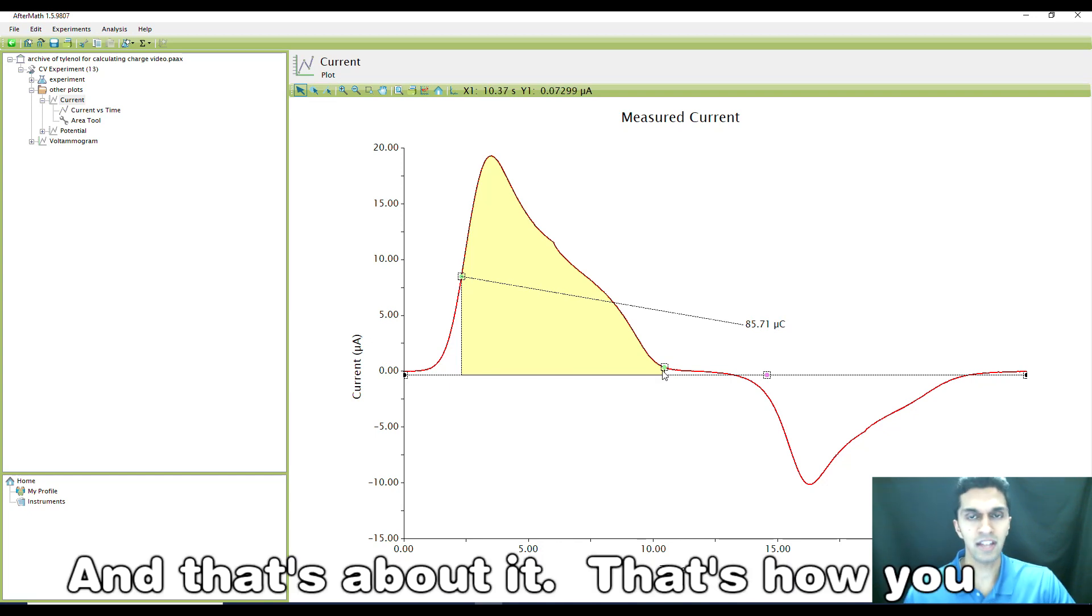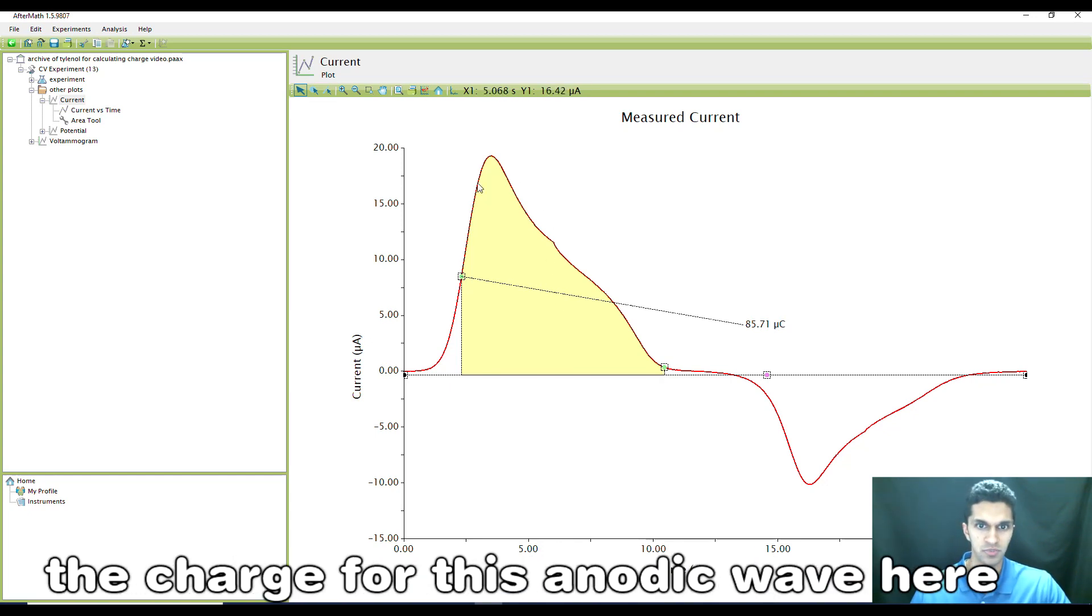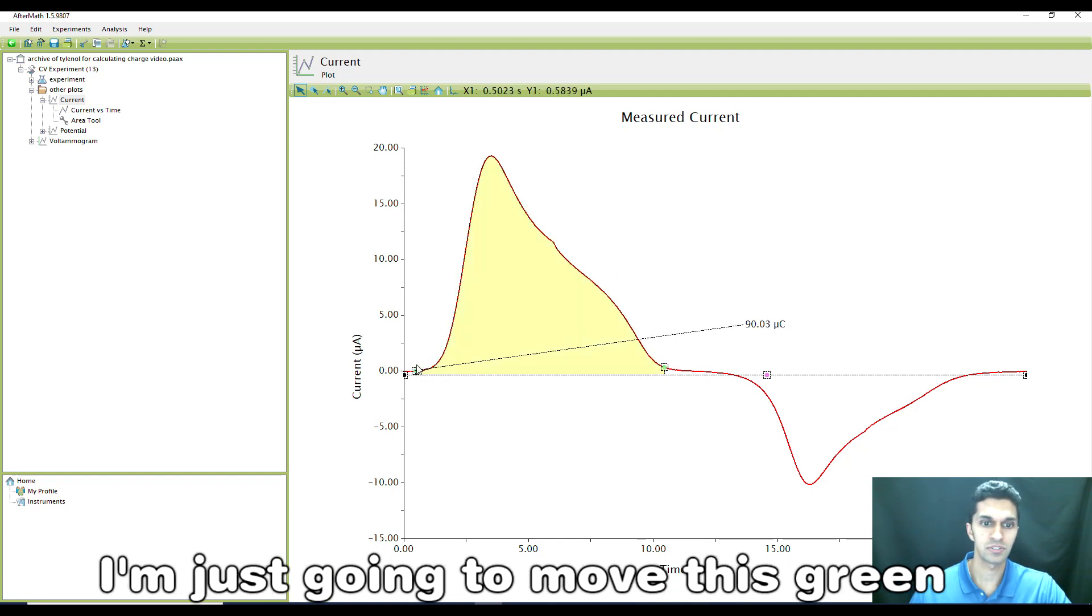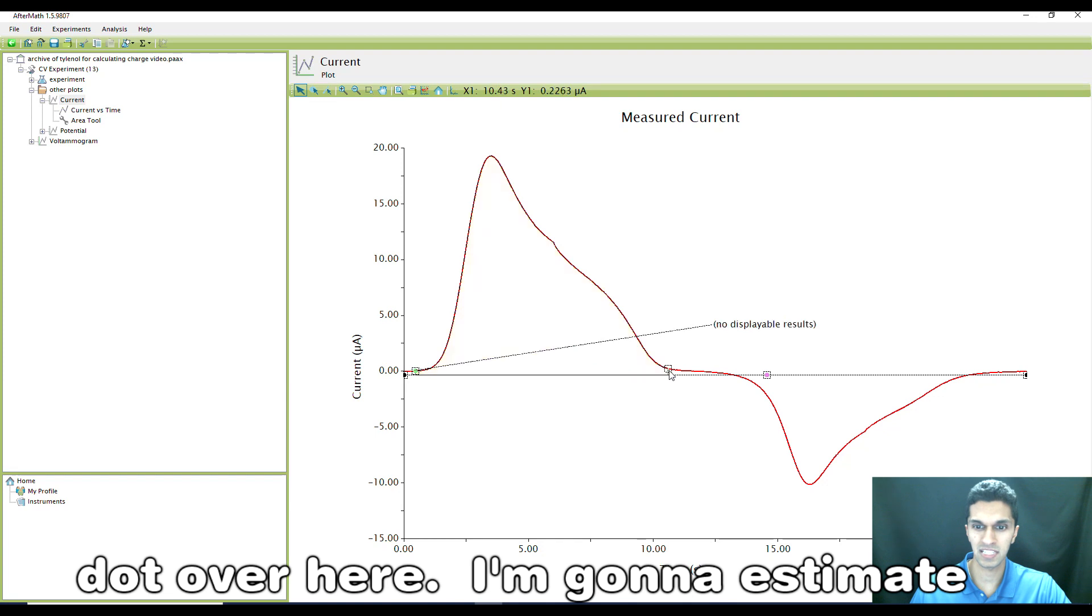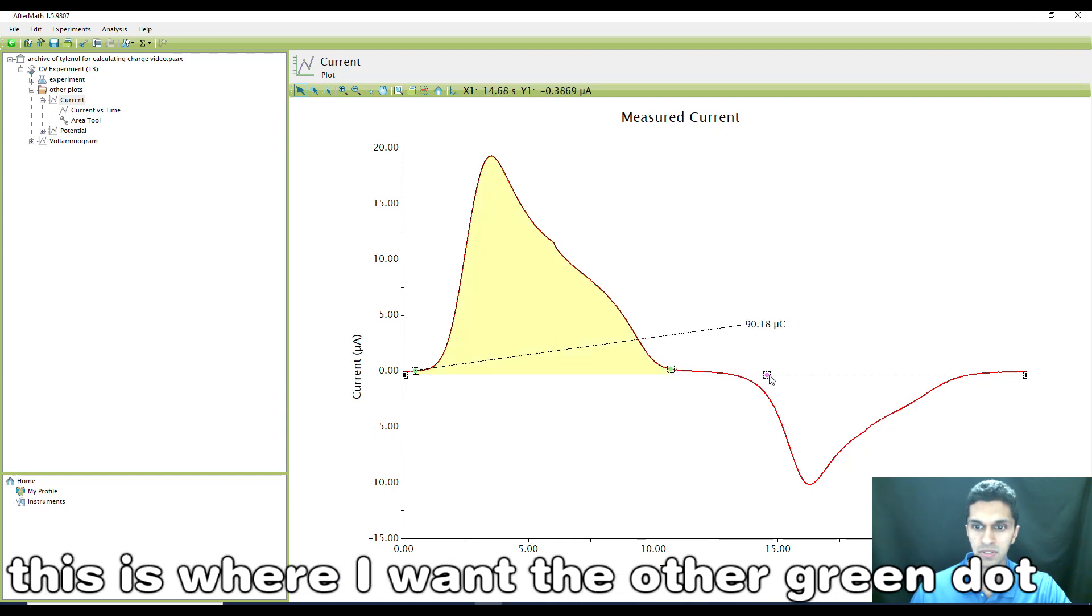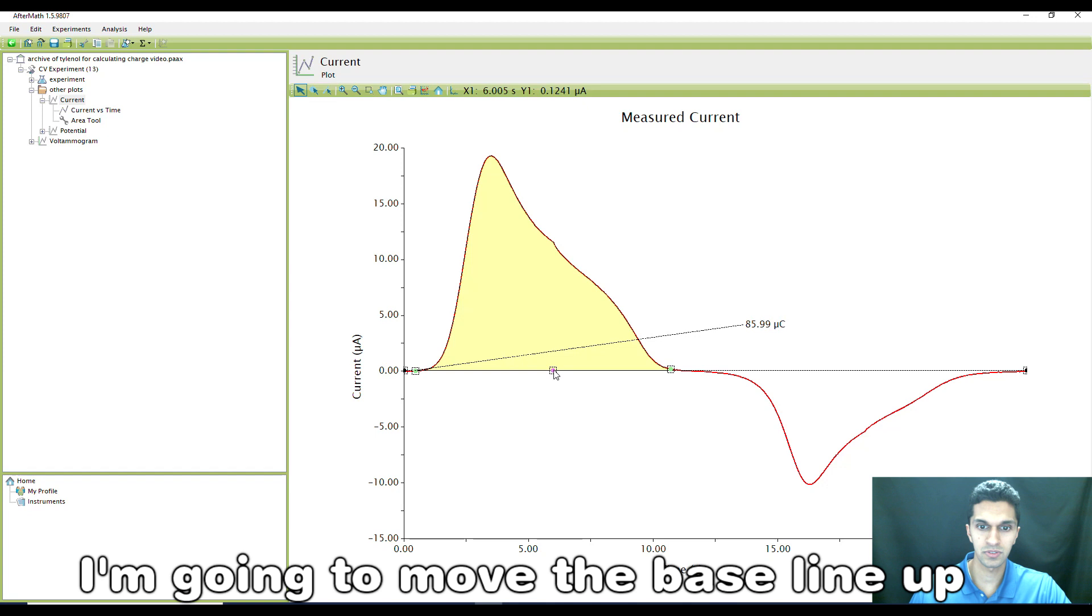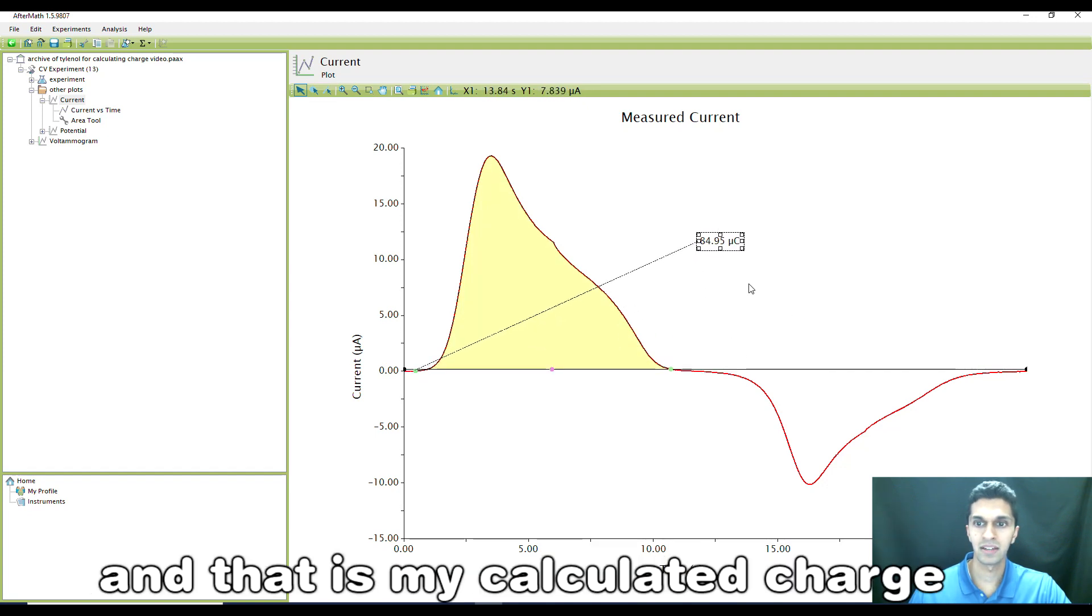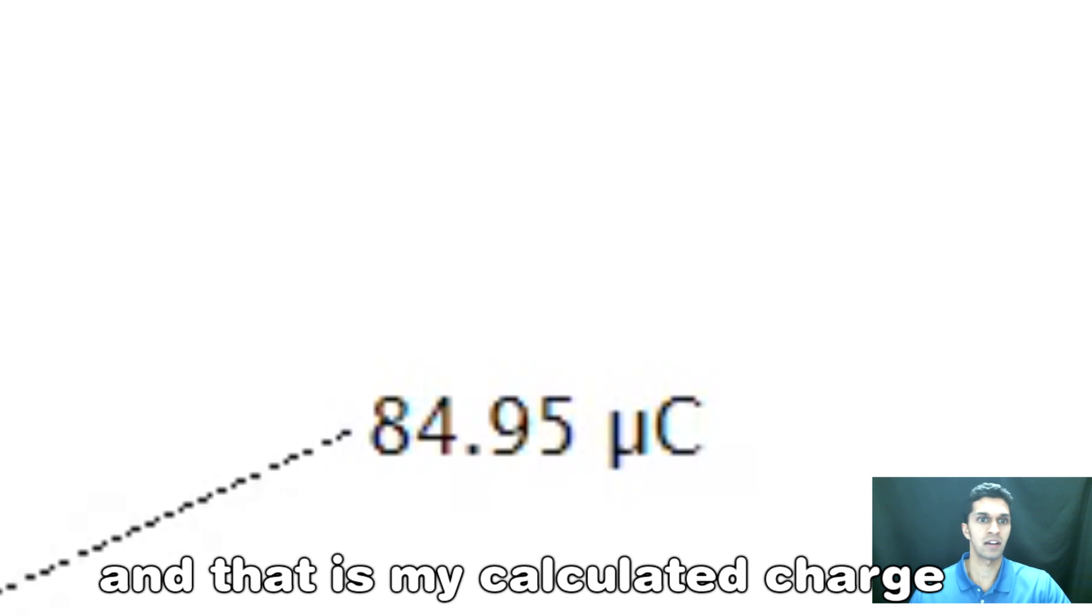That's about it. That's how you determine the charge. If I just want the charge for this anodic wave here, I'm going to move this green dot over here. I'm going to estimate where I want the other green dot, then move the baseline up a little bit. And that is my calculated charge.